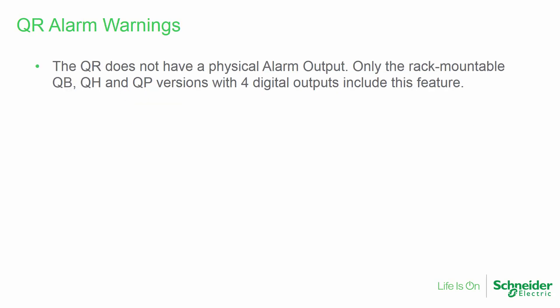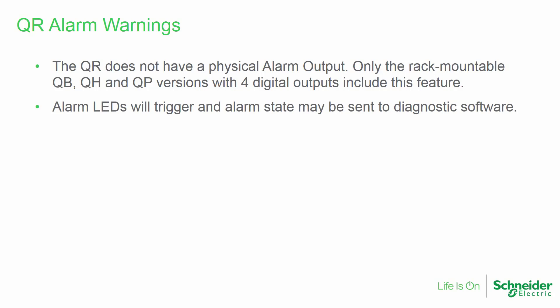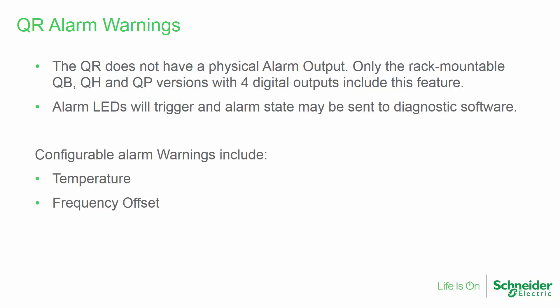The QR remote type radio does not have a physical alarm output. Only the rack-mountable QB, QH, and QP versions with their four digital outputs include this feature. However, alarm warnings may be configured. These include temperature, frequency offset, RSSI level, VSWR level, and DC power supply voltage.